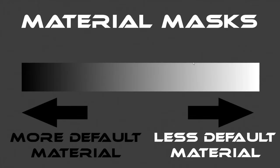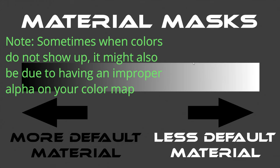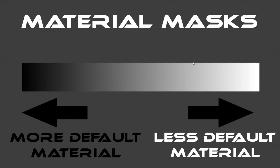The first thing I want to talk about are material masks. Inside of the game, Valve has actually added some default materials to certain parts of the weapon. If you've been working on a project and moved it into the workshop and noticed that certain parts didn't get the colors you applied, or looked a little off, this is more than likely due to those default materials. The material mask works on a grayscale where white reduces the default material and black adds it back to the weapon.